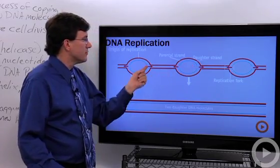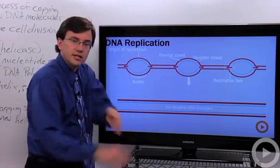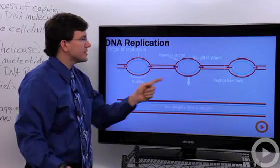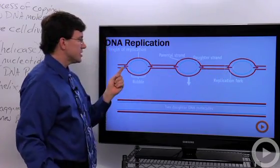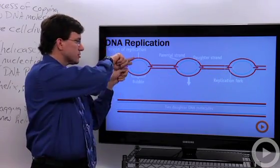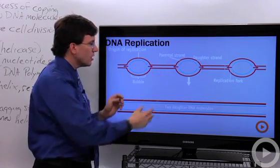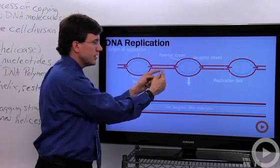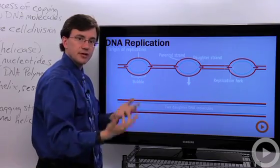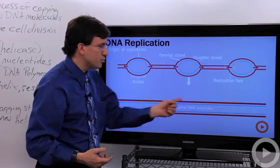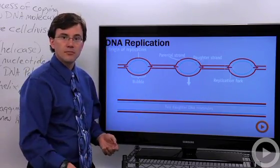Each side of the replication bubble, the place where the DNA is being opened up, that is called a replication fork. So this bubble has a replication fork that's growing in this direction, and a replication fork that's growing in that direction. Ultimately, when these two forks grow together, their efforts will be joined together using that enzyme called ligase, and we wind up with two new DNA molecules.